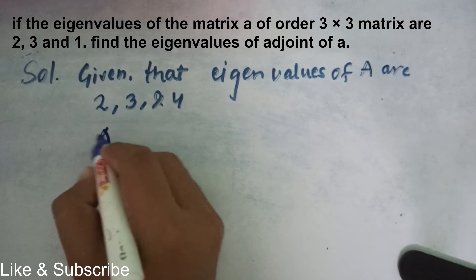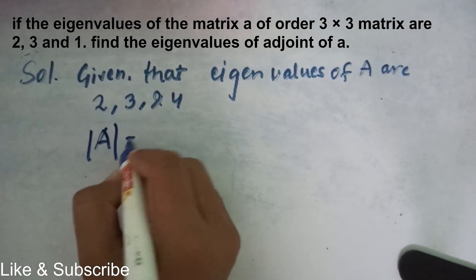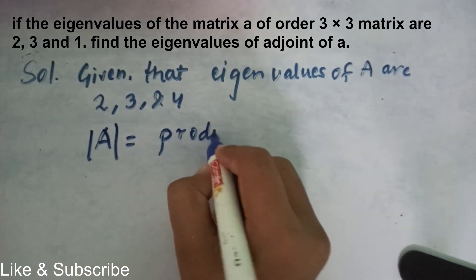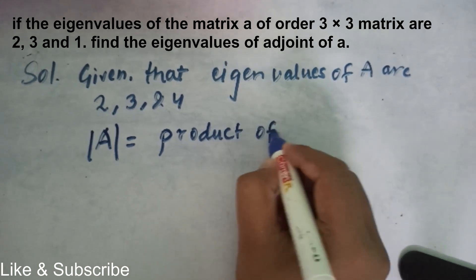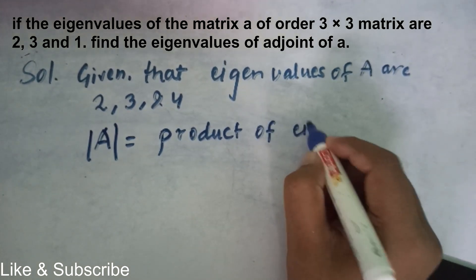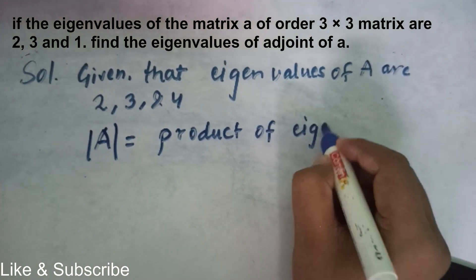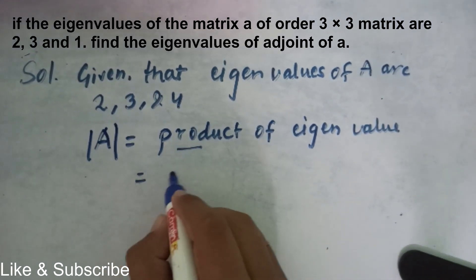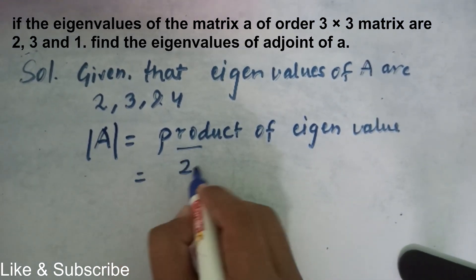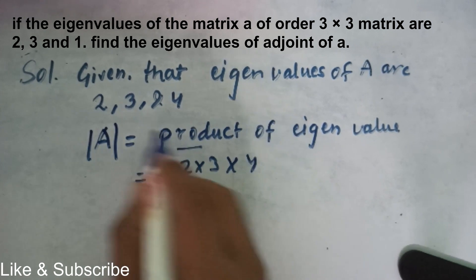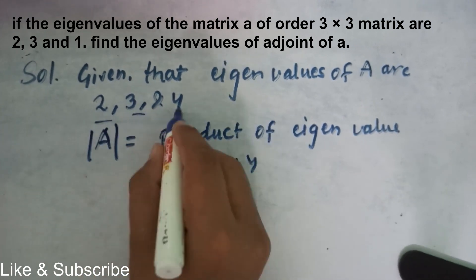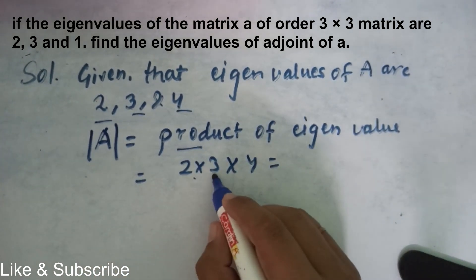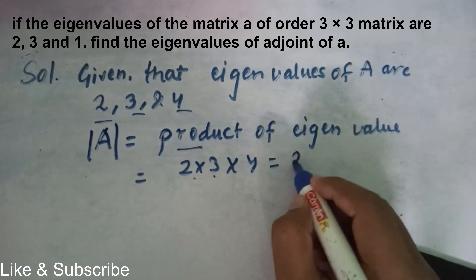The determinant of the matrix equals the product of all eigenvalues. So the determinant is 2 × 3 × 4, which gives us 6 × 4 = 24.